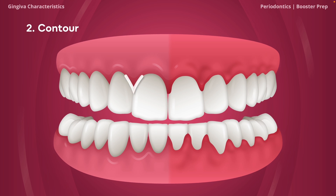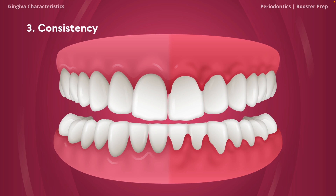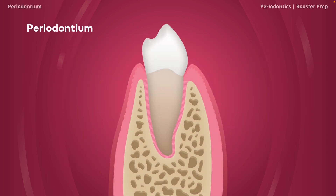In a disease state, gums can become edematous — they swell and become puffy. The third C is consistency — healthy gums are consistent in texture, however in disease they can be softer due to edema or stiffer due to fibrosis, and in some cases they may begin to bleed. Friable gingiva bleeds extremely easily.